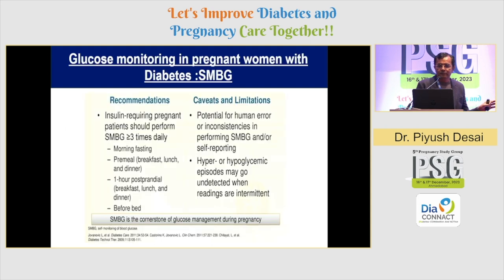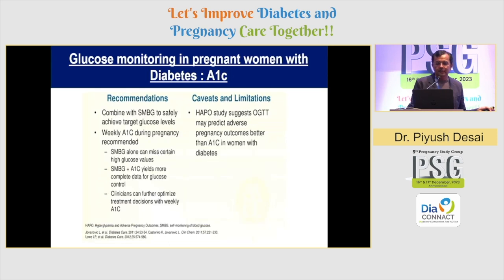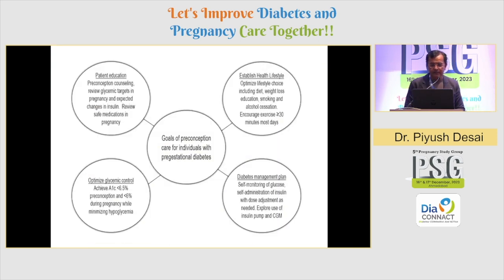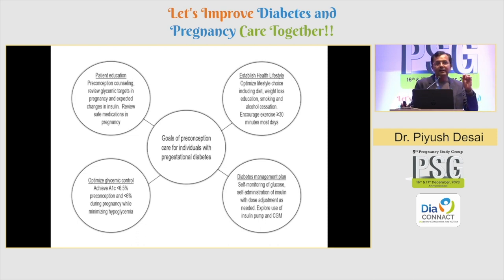In summary, use HbA1C to diagnose early pre-gestational diabetes in the first trimester. Once a patient is diagnosed with gestational diabetes, self-monitoring of blood glucose plus or minus continuous glucose monitoring is the approach to follow. The goal is to educate the patient, identify diabetes early using HbA1C, and use it even at the pre-conceptional stage so we can treat mild dysglycemia and restore normal glycemia at the earliest possible opportunity. Thank you.